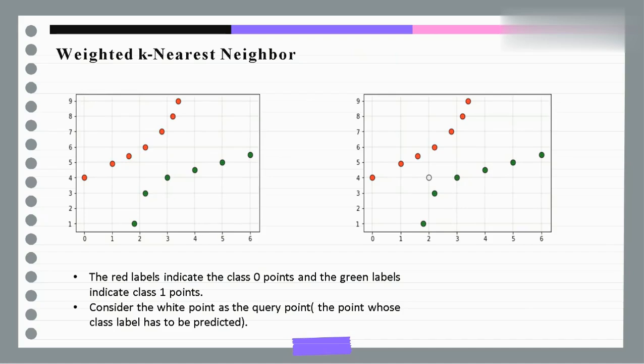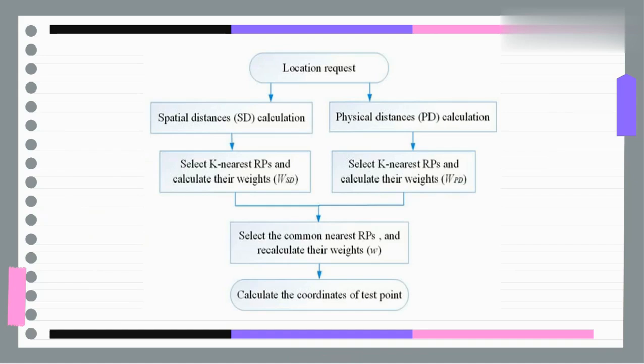In this dataset, the red label indicates class 0 point and the green label indicates the class 1 point. Consider the white point as a query point. Here is a flowchart of how the weighted KNN work.